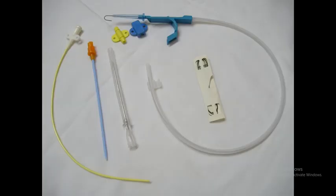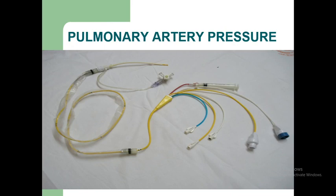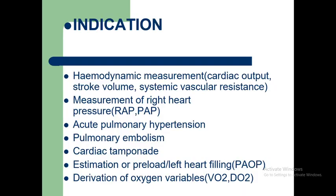These are the basic equipment used to check central venous pressure — which you will have seen in hospital. Moving on to pulmonary artery pressure monitoring. Indications include hemodynamic measurements such as cardiac output, stroke volume, and systemic vascular resistance; measurement of right heart pressure; acute pulmonary hypertension; pulmonary embolism; cardiac tamponade; estimation of preload or left heart filling; and derivation of oxygen variables.